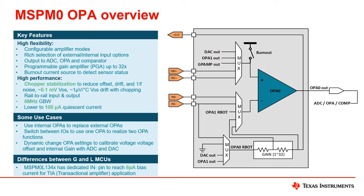The last thing to note is that in order to facilitate applications such as photoelectric sensor detection, the MSPM0L134X reduces its input bias current from 50 picoamps to only 6 picoamps. This happens by retaining only the analog N function of the MCU pin.